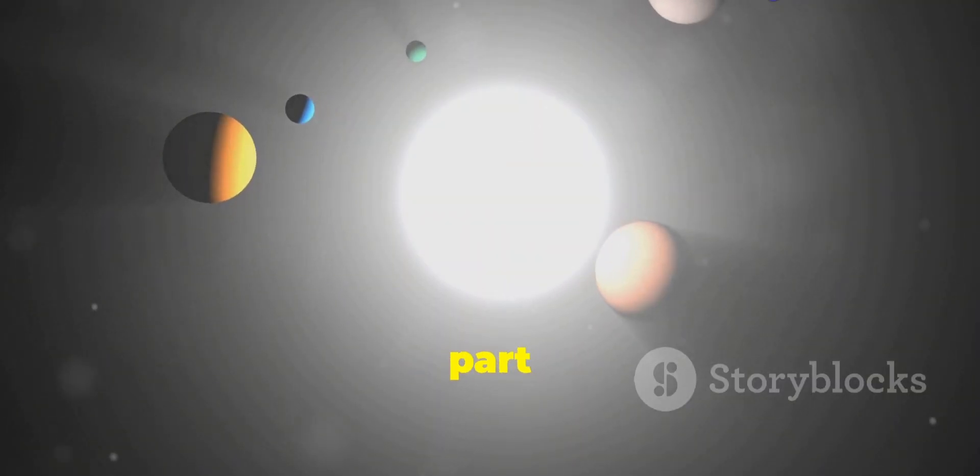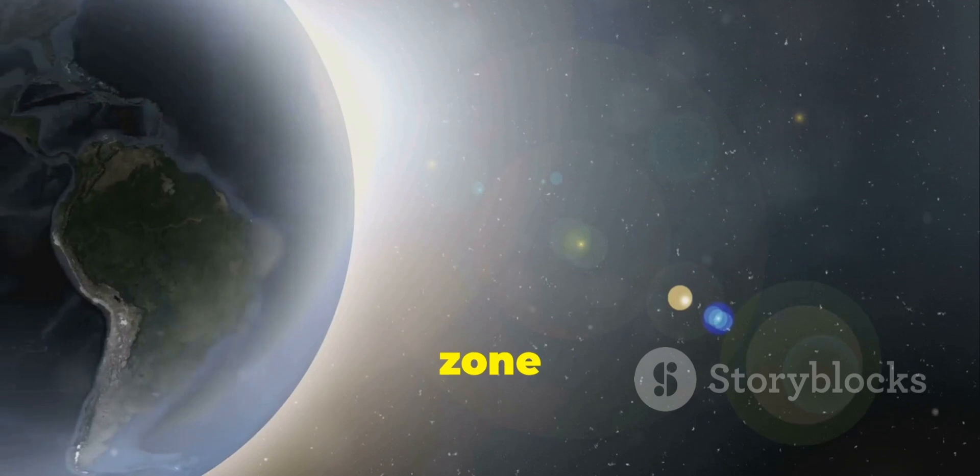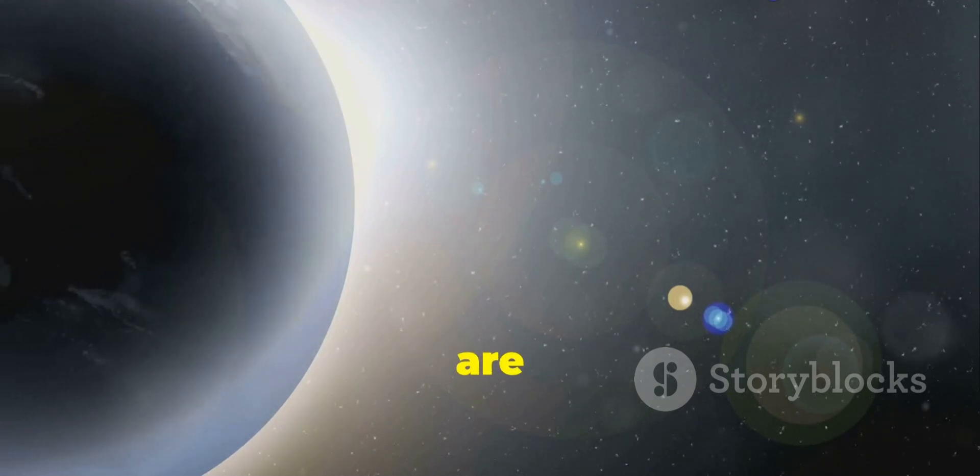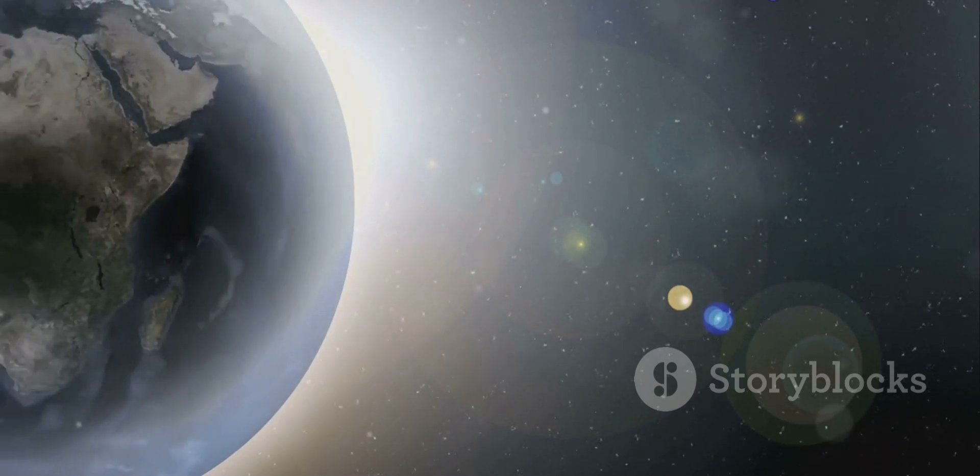Here's the exciting part. K2-18b resides in the habitable zone of its star. This sweet spot is like the Goldilocks zone of planets, where temperatures are just right for liquid water to exist on the surface, a key ingredient for life as we know it.